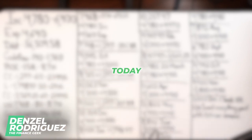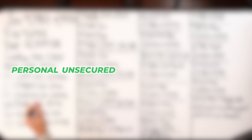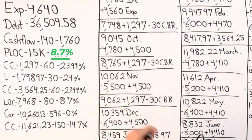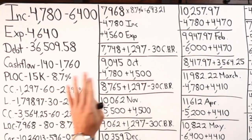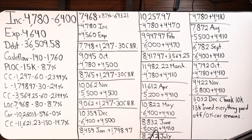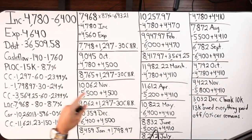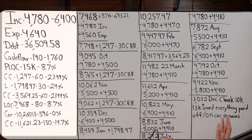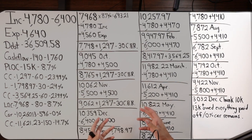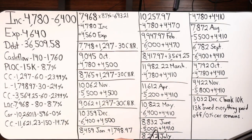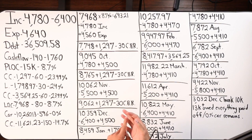Welcome class. On the board we have a velocity banking case study using a personal unsecured revolving line of credit for $15,000 at 8.7%. We've got income starting as low as $4,780 per month and as high as $6,400 a month. Their goal is to remove bad debts, properly implement velocity banking, and then position themselves to build a business, invest, and create financial independence and freedom.